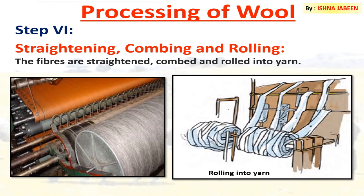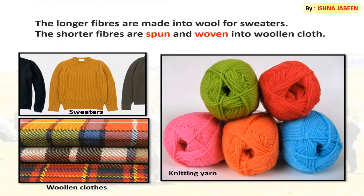The sixth step is straightening, combing, and rolling. The fibers are straightened, combed, and rolled into yarn, as you can see in the picture. The longer fibers are made into wool for sweaters, and the shorter fibers are spun and woven into woolen clothes.